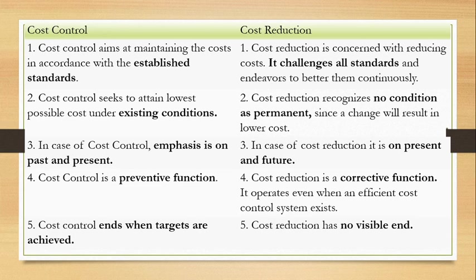Third point: cost control always emphasizes the past and present — it looks at what you have done in the past and determines what costing should be in the present. But cost reduction always looks toward the future. Cost control is a preventing function, while cost reduction is a corrective function aimed at increasing efficiency.